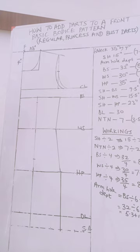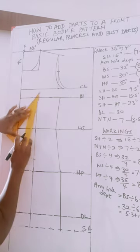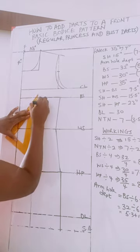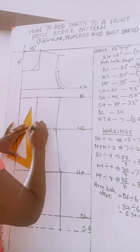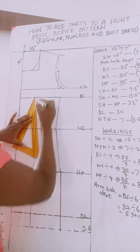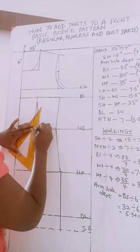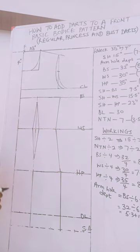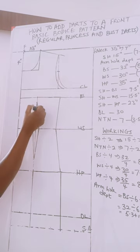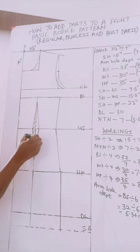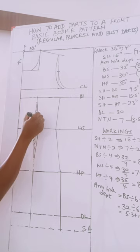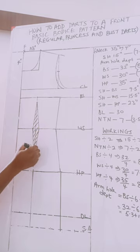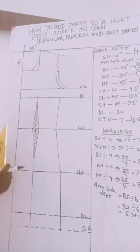So I'm going to connect that in a triangle. So this is our waistline, so when it's time to cut, it is this part we are going to be cutting at. So that is all for the regular dart.